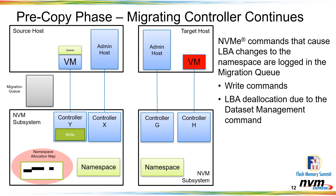Commands can happen on the VM that change LBAs. A write could come in that rewrites an LBA or writes a new allocation, and dataset management trim commands can also mark data as no longer valid. Walking through a write command: the allocation map gets updated because two logical blocks weren't previously allocated — a new entry appears. We take those LBAs and put them in the migration queue in order so they can be played back later on top of the namespace, ensuring the target namespace matches the source.